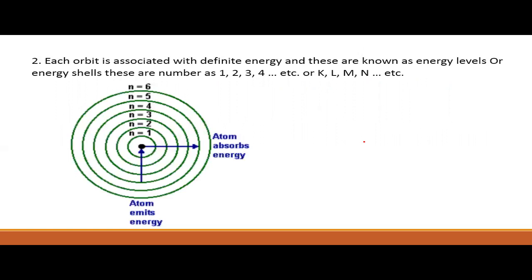The second postulate is: each orbit is associated with definite energy. These are known as energy levels or energy shells, numbered as 1, 2, 3, 4, etc., or K, L, M, N, etc. This is the nucleus and these are the first, 2nd, 3rd, 4th, 5th, and 6th energy shells. The first energy level is also named as K, 2nd as L, 3rd as M, and 4th as N.